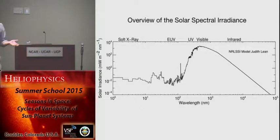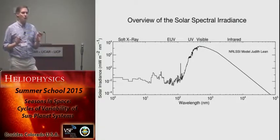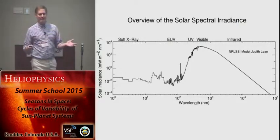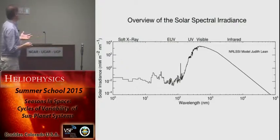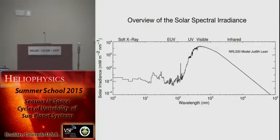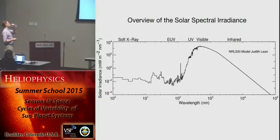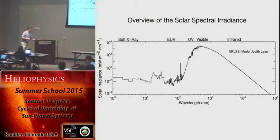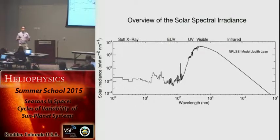That's my two cents on the total solar irradiance — I'm certainly not an expert. My area of interest is more the spectral irradiance, that is the irradiance and its variability at different wavelengths. I'm going to start in the soft X-rays and move up, basically looking at the morphology of the solar atmosphere as a function of these different wavelengths.